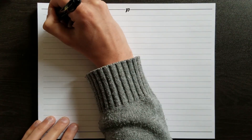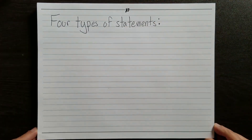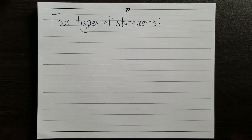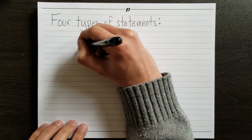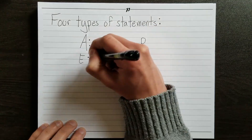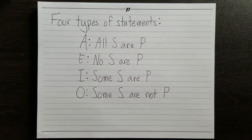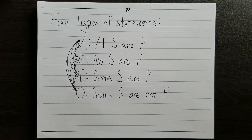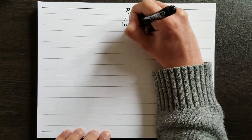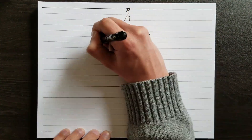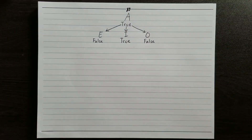In our last video in this series, we talked about how there are four types of statements in categorical logic: A-type, E-type, I-type, and O-type. These types of statements all bear inferential relations to one another. What that means is that if you're given the truth value of one of the statements, you can immediately know the truth values of some of the others.